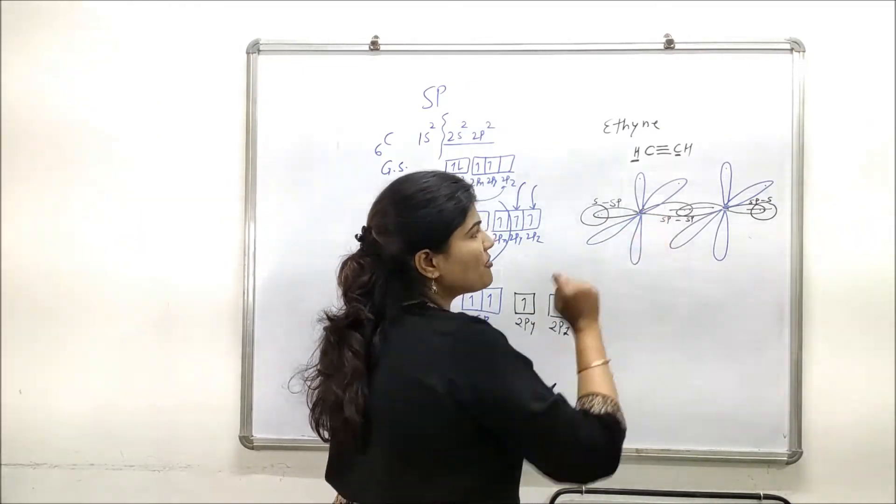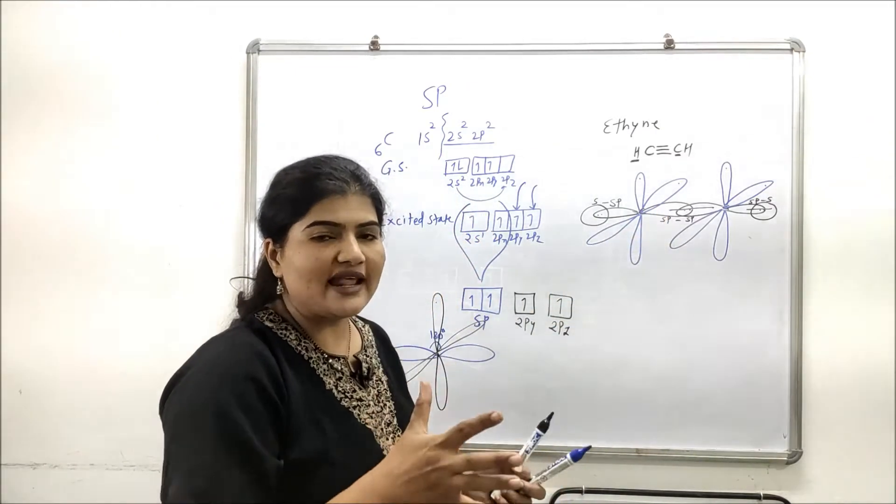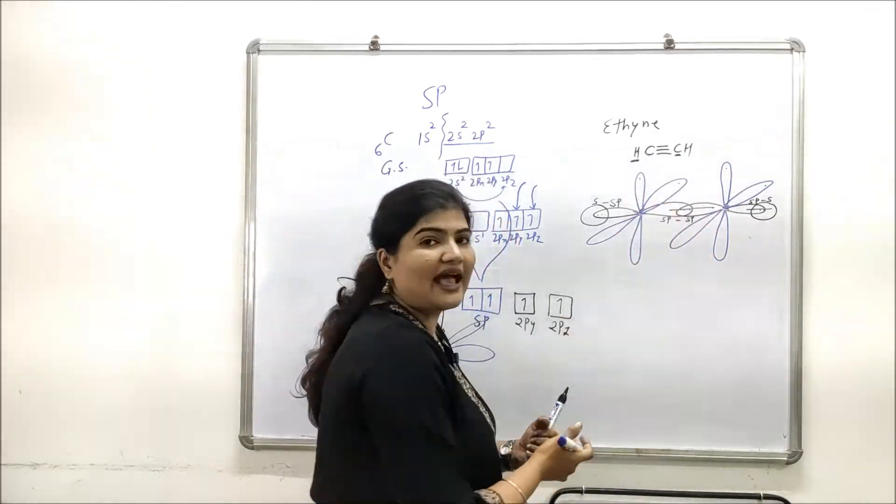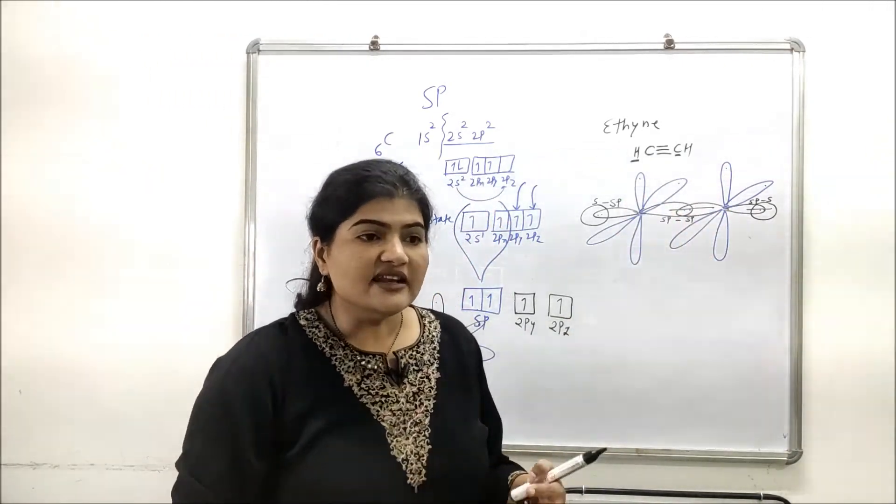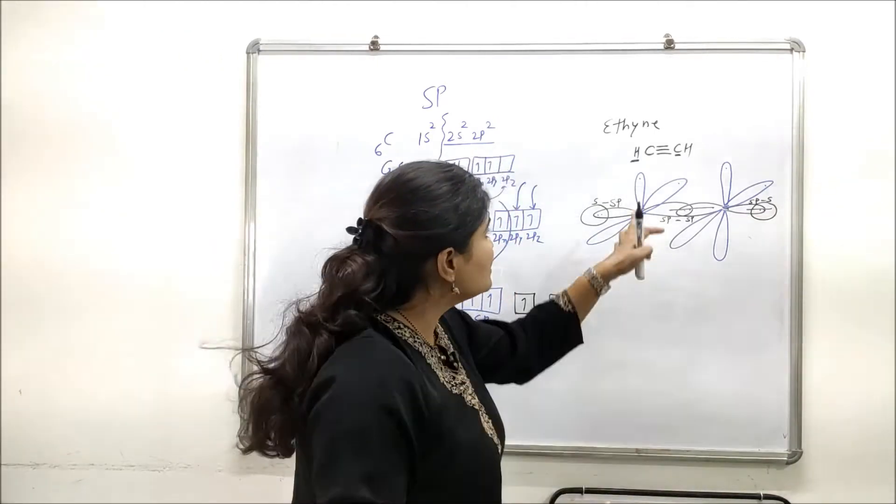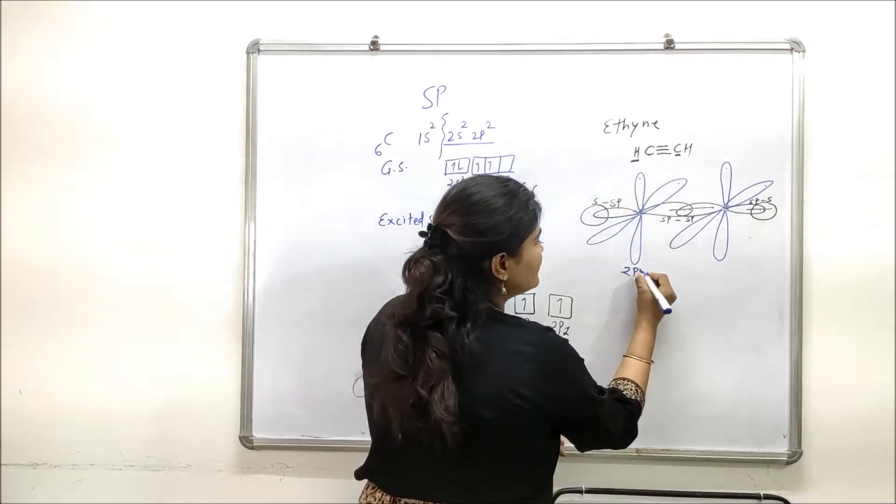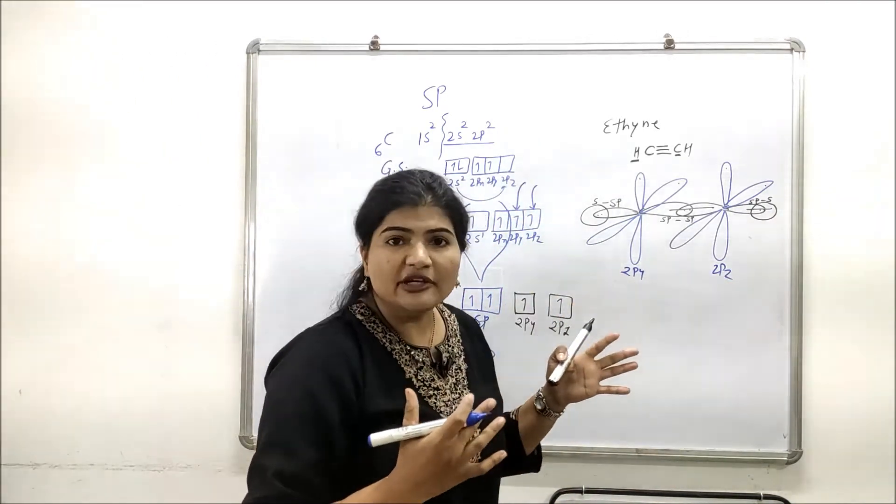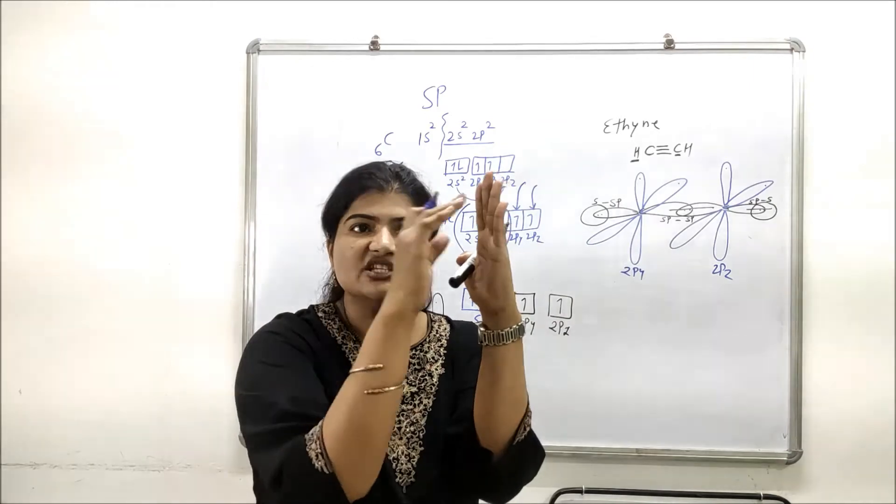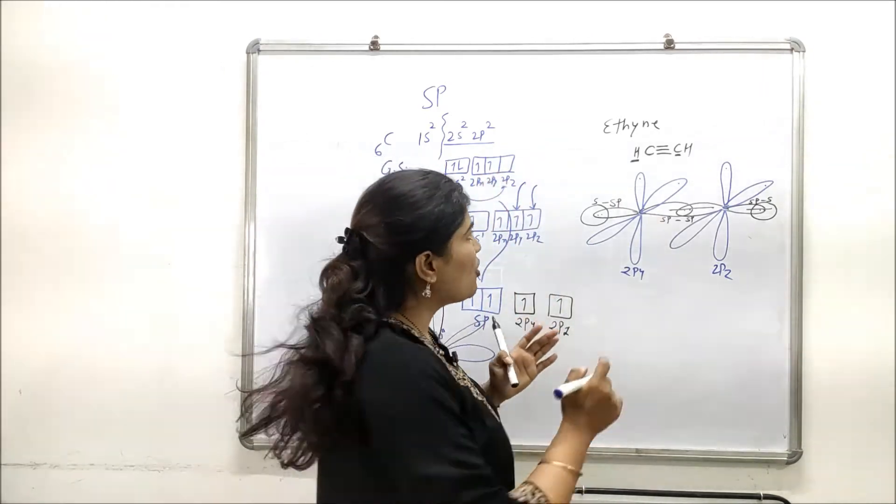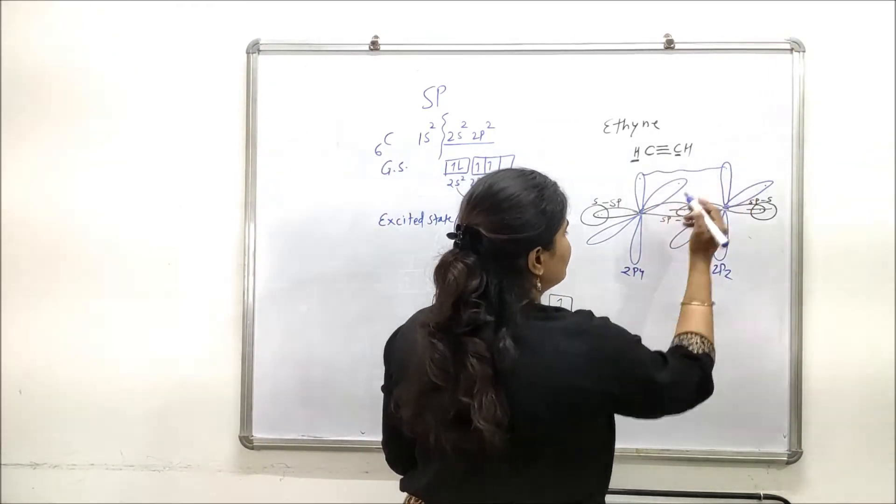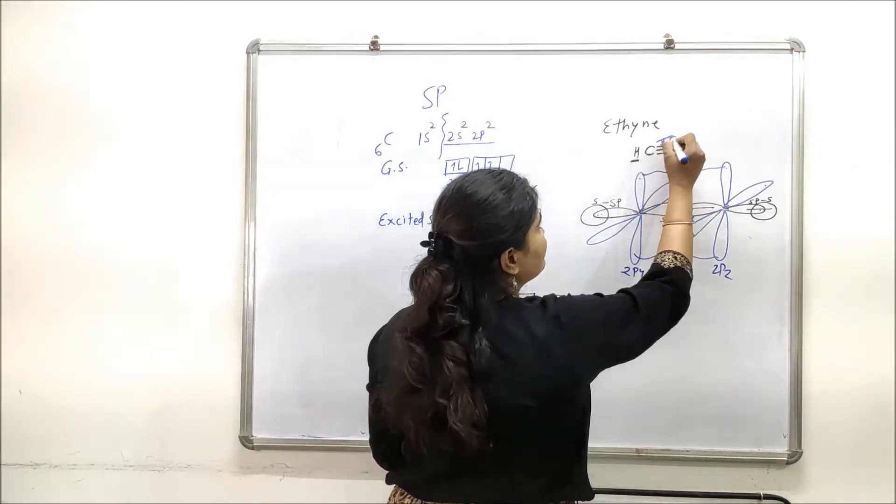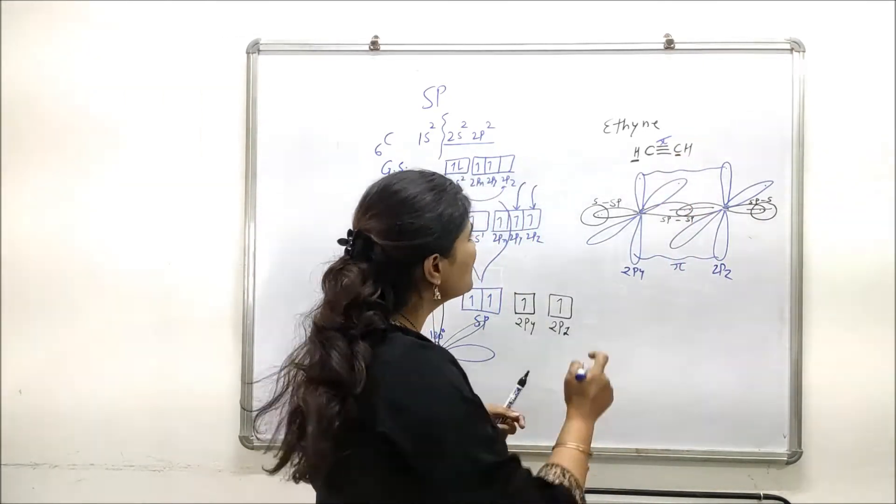What about these two unhybridized orbitals? As their alignment is proper, this 2py and this 2py, as their planes are the same, they're coplanar, their alignment is proper. When they are approaching each other, they will develop lateral overlap. So this 2py and this 2py will form one pi bond, which you can call this pi bond.